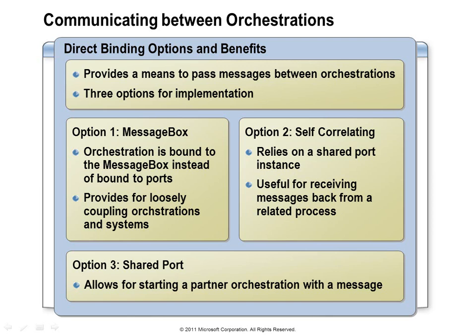Direct binding raises two questions: why would we want to use it, and what do we do about subscriptions? The short answer to the first question is that it gives us new options for coordinating communication between orchestrations. There are three ways to implement direct binding: binding directly with the message box, self-correlation, and shared ports. Let's take a closer look at each of these direct binding options.